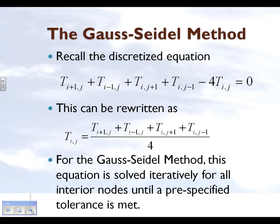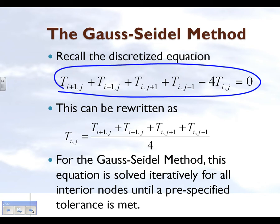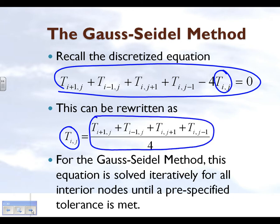Recall the discretized equation. The Gauss-Seidel method asks you to rewrite the equation for the temperature node i,j in terms of the temperatures at the other four nodes. For the Gauss-Seidel method, this particular equation is solved iteratively for each and every node where we don't know the steady state temperature, and we keep on iterating until we find that the pre-specified tolerance is met.